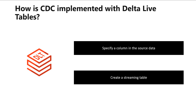To create the target streaming table, use the CREATE OR REFRESH STREAMING TABLE statement in SQL, or the create streaming table function in Python. To create the streaming definition of a CDC processing, use the APPLY CHANGES statement in SQL or the apply changes function in Python.